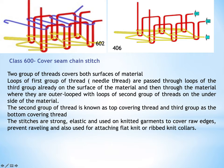Two groups of threads cover both surfaces of the material. The loops of the first group — the needle threads — are passed through the loops of the third group already on the surface of the material. The third group here refers to the top covering thread, which appears on the face side of the fabric, securing the needle loops on the face side of the material.